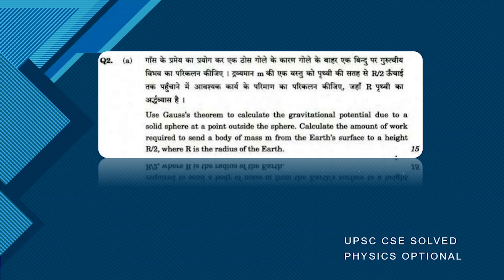Hello everyone, in today's video we are going to solve a previous year question of physics optional. The question says: use Gauss's theorem to calculate the gravitational potential due to a solid sphere at a point outside the sphere, and secondly, calculate the amount of work required to send a body of mass m from the Earth's surface to a height of R/2, where R is the radius of Earth.